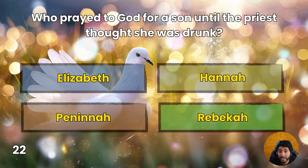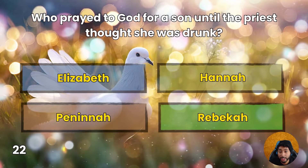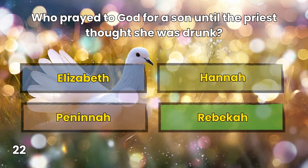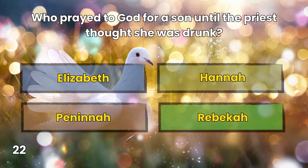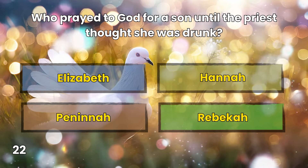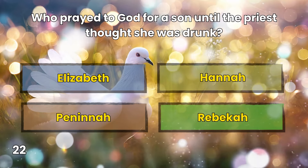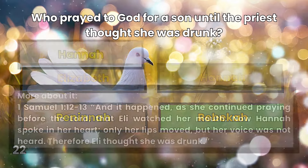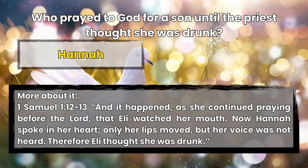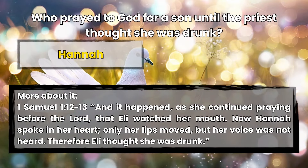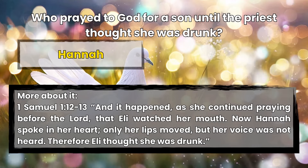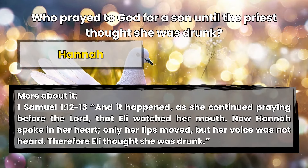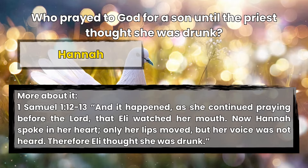Question 22: Who prayed to God for a son until the priest thought she was drunk? Elizabeth, Hannah, Peninnah, or Rebekah? Hannah. 1 Samuel 1:12-13 — And it happened, as she continued praying before the Lord, that Eli watched her mouth. Now Hannah spoke in her heart; only her lips moved, but her voice was not heard. Therefore Eli thought she was drunk.